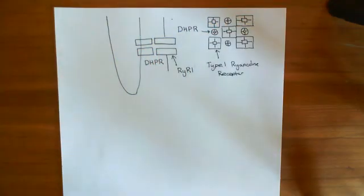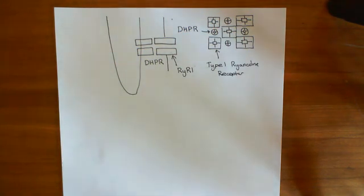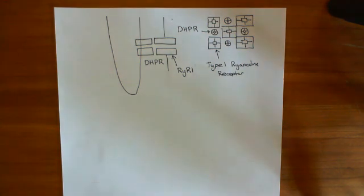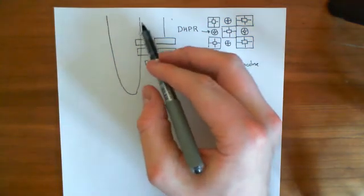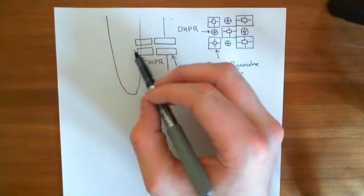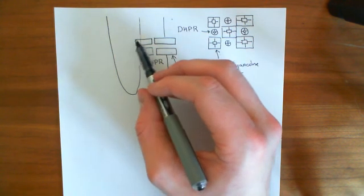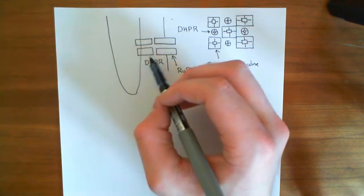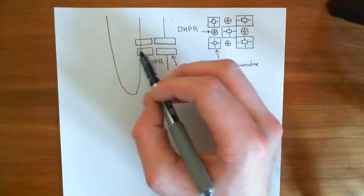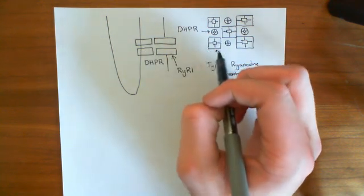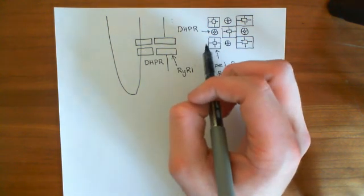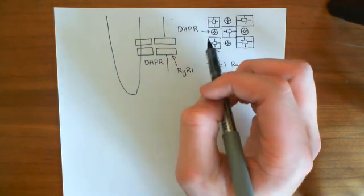What has happened is that these ryanodine receptors of the first type have opened. The voltage across the sarcolemma changed — it depolarized. That caused the dihydropyridine receptor to adopt an open conformation, which then caused these type 1 ryanodine receptors to adopt an open conformation.